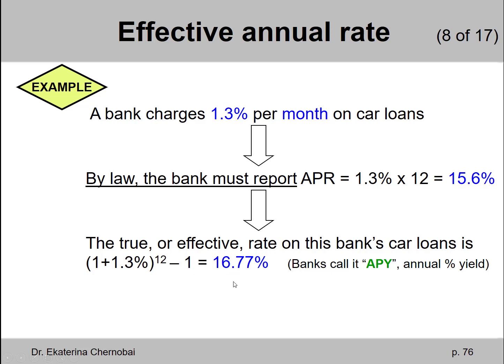So how do we get 16.77% per year? We just use the EAR formula.